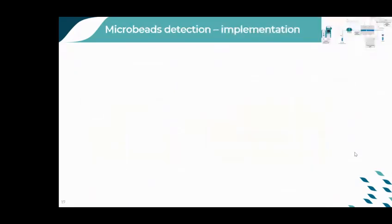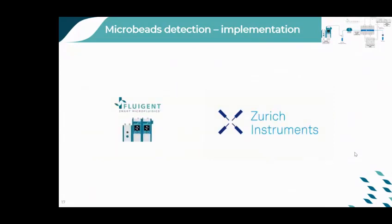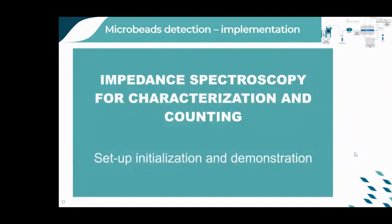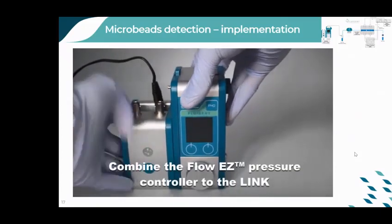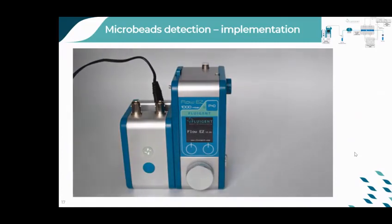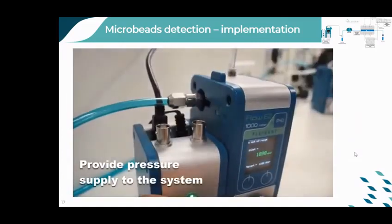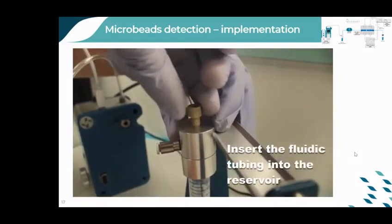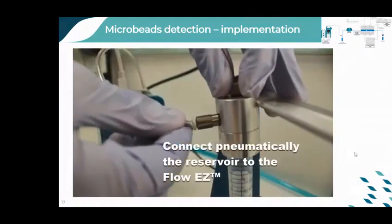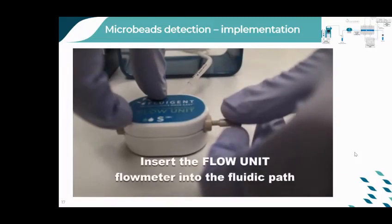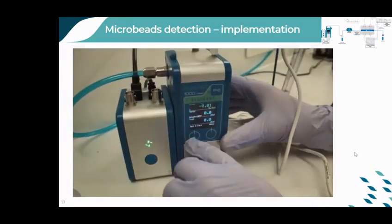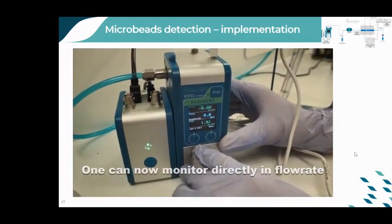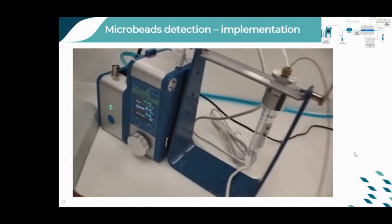We also thought it could be useful to show you how we really set up the platform, so we made a video of the setup implementation with real measurements. As we saw in the scheme, you first need to connect the Fluorizy to the Link for power supply, and more importantly, to allow access to our software. You can next provide the pressure supply to the system and connect the Fluorizy to the reservoir. The tubing is connected to the reservoir and passes through a flow unit, which permits to switch from pressure control to flow rate control. You can directly set the flow rate by using the Fluorizy dial, allowing for local control without the need of a PC. The flow control part is now ready.